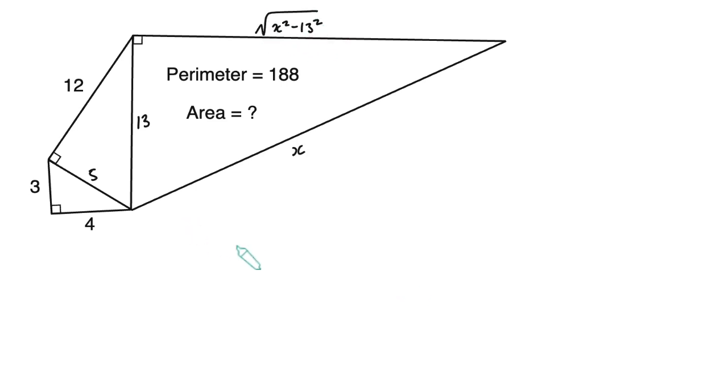That means we can now write down an expression for the perimeter, four plus three plus 12 plus the square root of X squared minus 13 squared plus X equals 188. We can rearrange that to give the square root of X squared minus 13 squared equals 169 minus X.